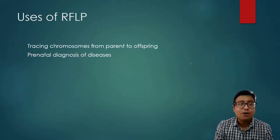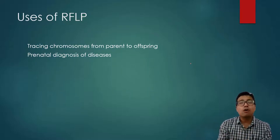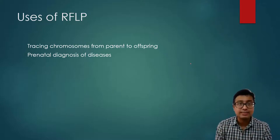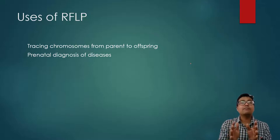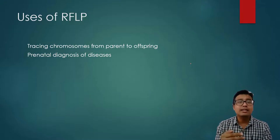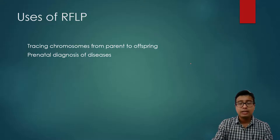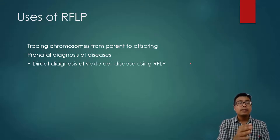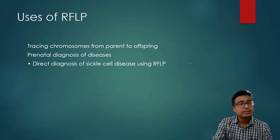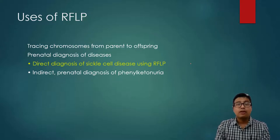The uses of RFLP include tracing chromosomes from parent to offspring. They are mainly used in prenatal diagnosis of diseases — conditions with medico-legal importance that need to be diagnosed before the child is born, so a decision can be made about continuing the pregnancy. Key uses include diagnosis of sickle cell disease and indirect prenatal diagnosis of phenylketonuria.